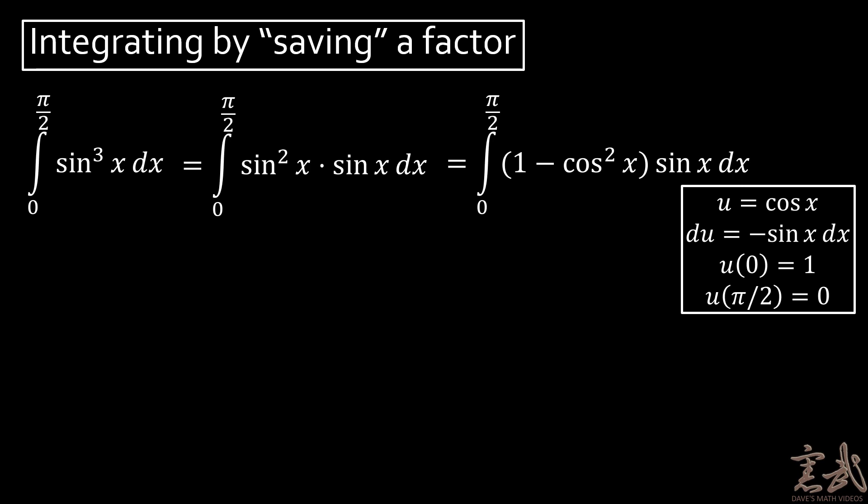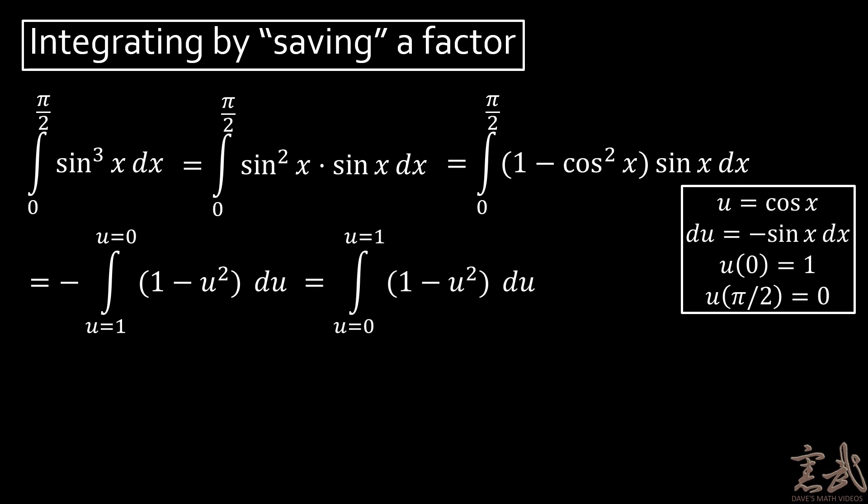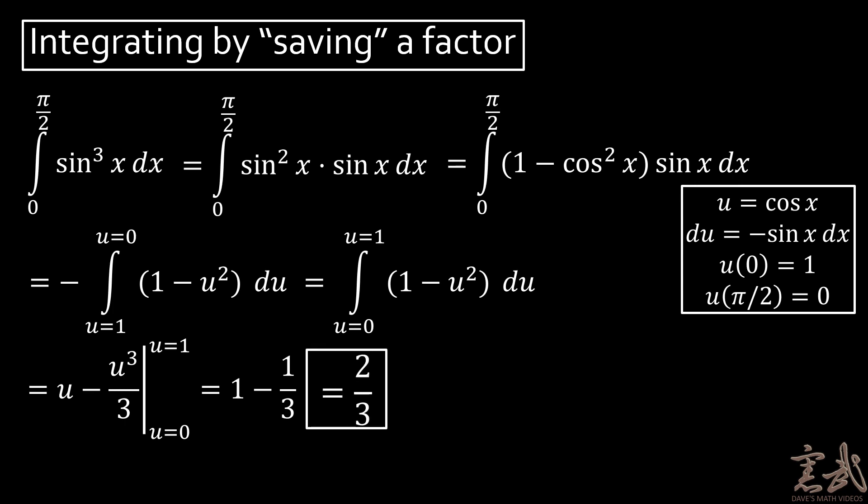Owing to the Pythagorean identity, we can write our integral as 1 minus cosine squared of x, times sine of x dx. We can then carry out a u-substitution, whereby u equals cosine of x, du equals negative sine x dx, u(0) equals 1, and u(π/2) equals 0. This gives us negative 1 times the integral from u=1 to u=0 of 1 minus u² du. Since the limits are reversed, I eliminate the negative sign and get the integral from u=0 to u=1 of 1 minus u² du. This evaluates to u minus u³/3 at 1 and 0, giving 1 minus 1/3, or 2/3. Keep this value in mind as we'll be coming back to it later.